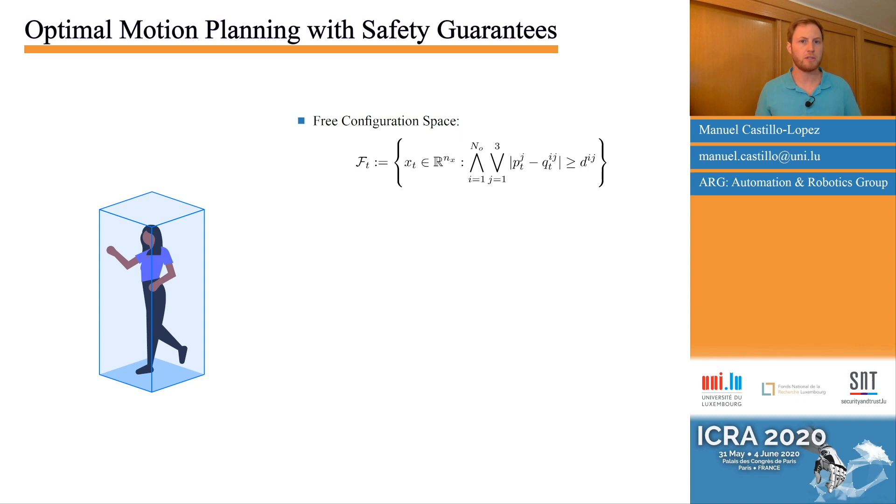Given the stochastic nature of the different agents, we can only enforce safety in a probabilistic sense, taking the form of a collision-free chance constraint. This constraint is enforcing that the probability of collision remains below the parameter alpha, which can be tuned to reach the level of conservatism required by the specific application.